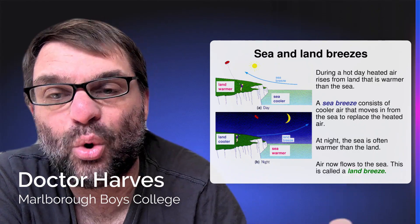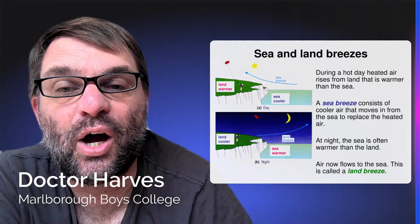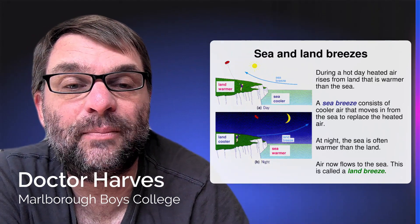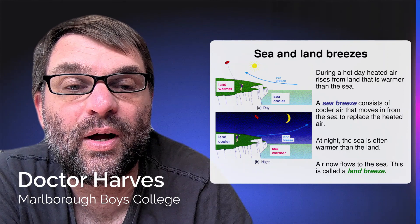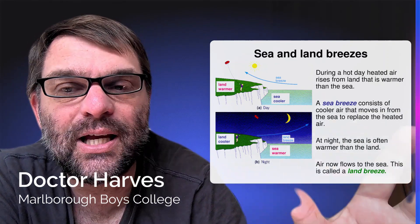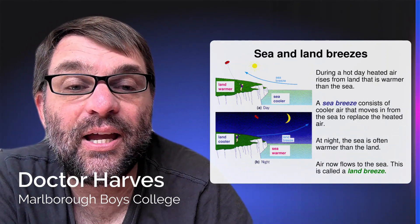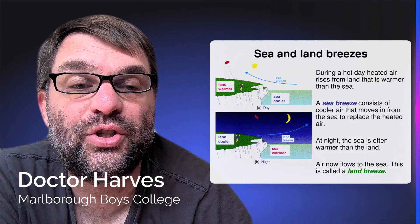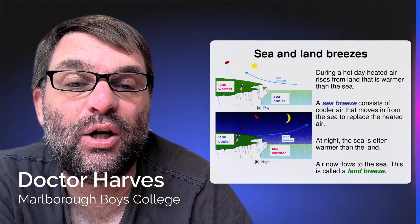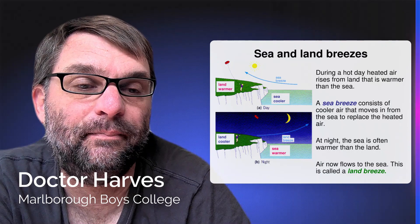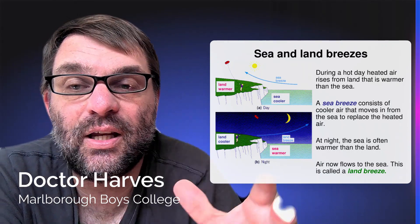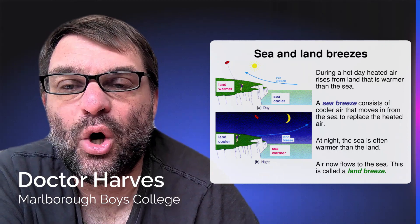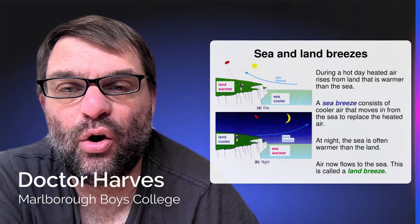At night the system goes in the opposite direction. The sea is often warmer than the land, and we'll explain the reasons why later in a later lesson. Air now flows towards the sea and this is called a land breeze, which happens at night time. So that in a nutshell, in summary, is what heat transfer is by convection.